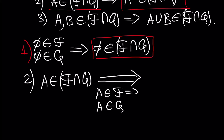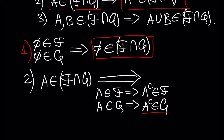But if A is inside F, then the complement of A is also inside F, because F is a sigma algebra. And the complement of A is also inside G, because G is a sigma algebra. So if the complement of A is inside F and also inside G, it must be inside their intersection.